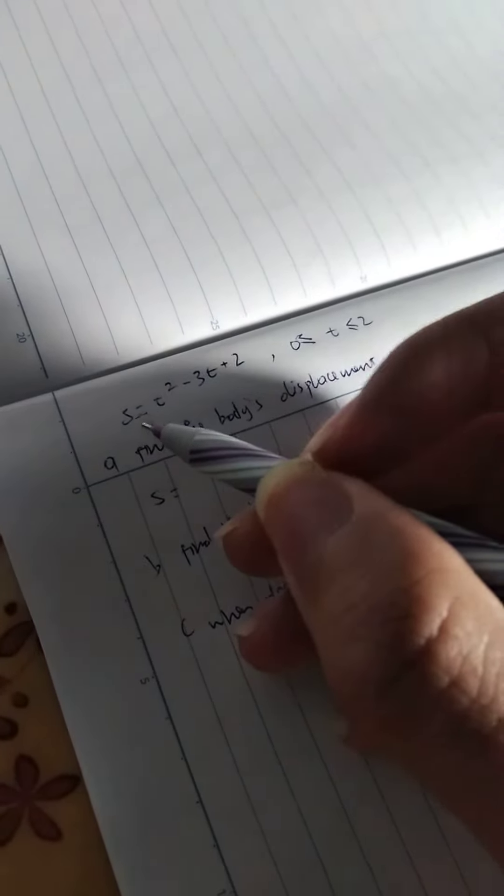The body's displacement can be easily found by replacing it into the displacement function. Remember, s is the displacement function. It describes the position of the body at any given time. So let's replace zero and two.